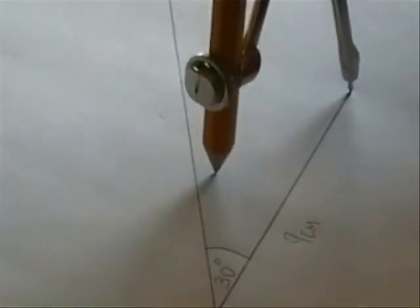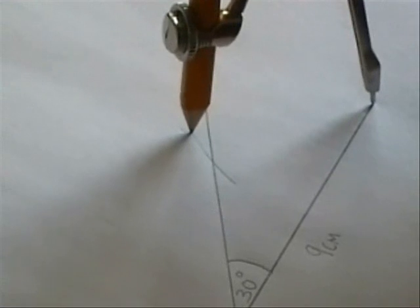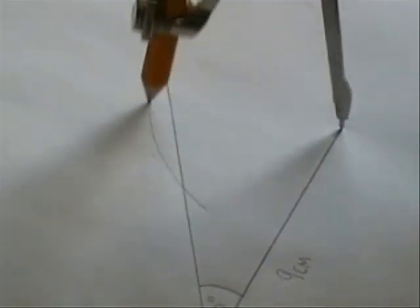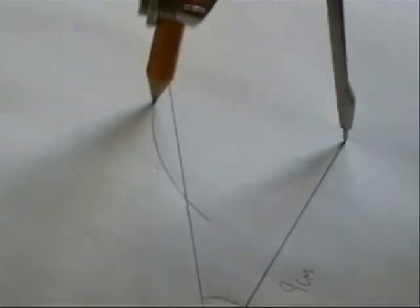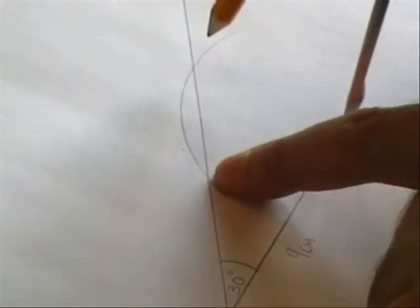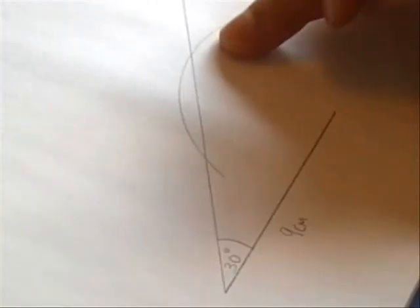I'll start my arc here but look what happens. This length of 5cm actually cuts this 30 degree angle in two places, here and here. The first thing I'm going to do is just ignore that for one moment.